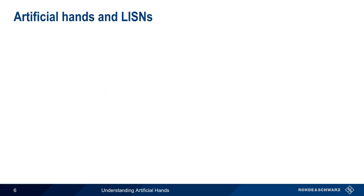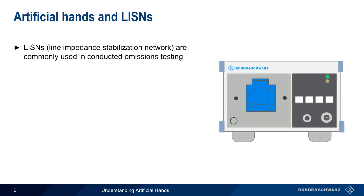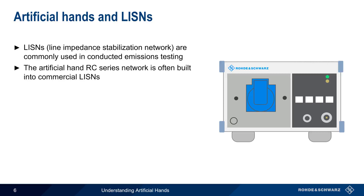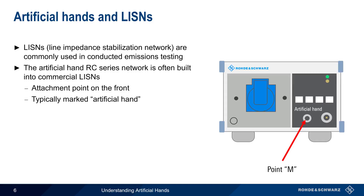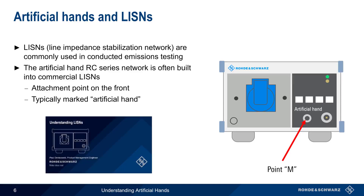Most conducted emissions testing requires the use of a so-called Line Impedance Stabilization Network, or LISN. Therefore, the RC series circuit used to create the artificial hand is often built into commercial LISNs. An attachment point or plug on the front represents the M point of the RC network, and is used to make the connections to the equipment under test. This point on the LISN is typically marked 'artificial hand.' Please see the separate presentation, Understanding LISNs, if you'd like to learn more about LISNs and the role they play in conducted EMC testing.